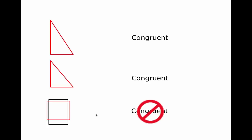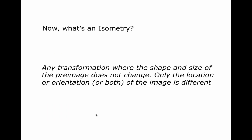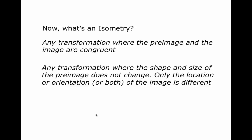Now that you understand congruency, let's talk about isometry. Isometry is any transformation where the shape and size of the preimage does not change. Only the location or orientation or both of the image is different. So any transformation where the preimage and the image are congruent.